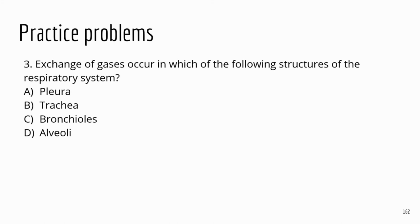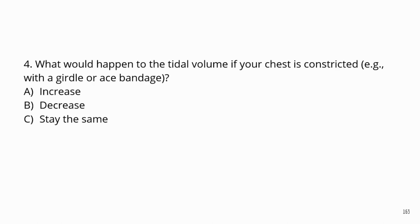Number three: exchange of gases occurs in which of the following structures? Gas exchange happens primarily in the alveoli — the air sacs at the end of the respiratory tract. Number four: what will happen to tidal volume if your chest is constricted? If your chest is constricted, you can't expand it as much, so you can't breathe in as much air — that's going to decrease your tidal volume.